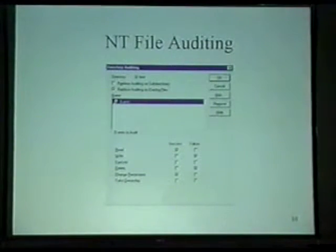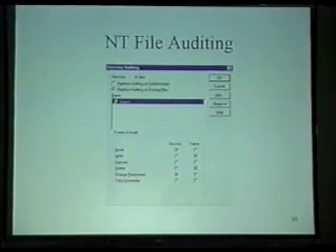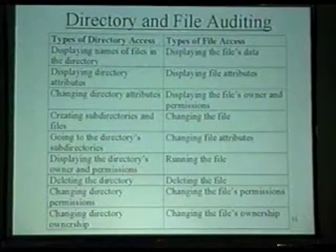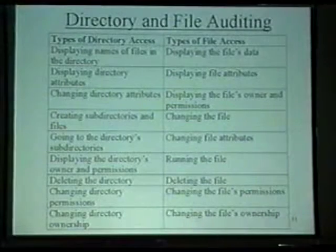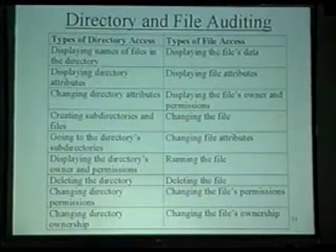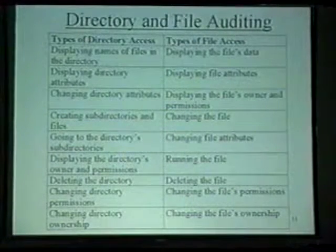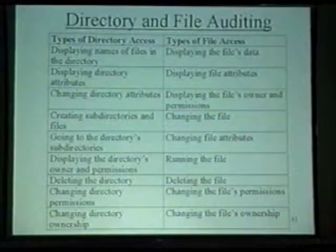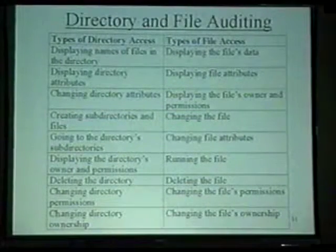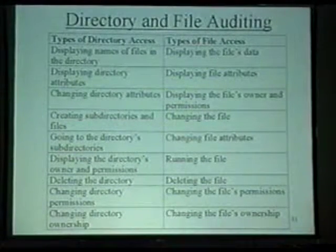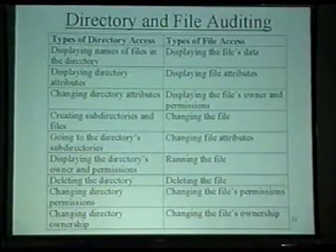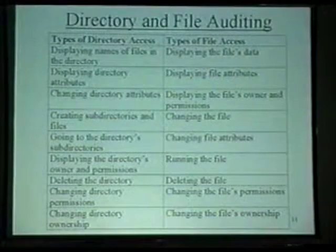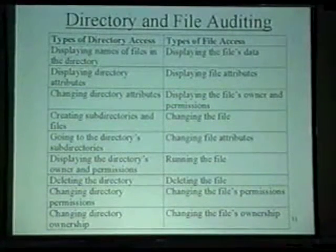This is what NT file auditing looks like - it's a different screen than the other types of things you audit. This lists the types of things audited when you turn on file systems auditing. For example, on the directory level you can see displaying names of files in the directory, displaying directory attributes - all of this will show up in the logs. The best use for this is to ask what events you want an audit trail for, then work backwards to determine which events to click in the dialog box.